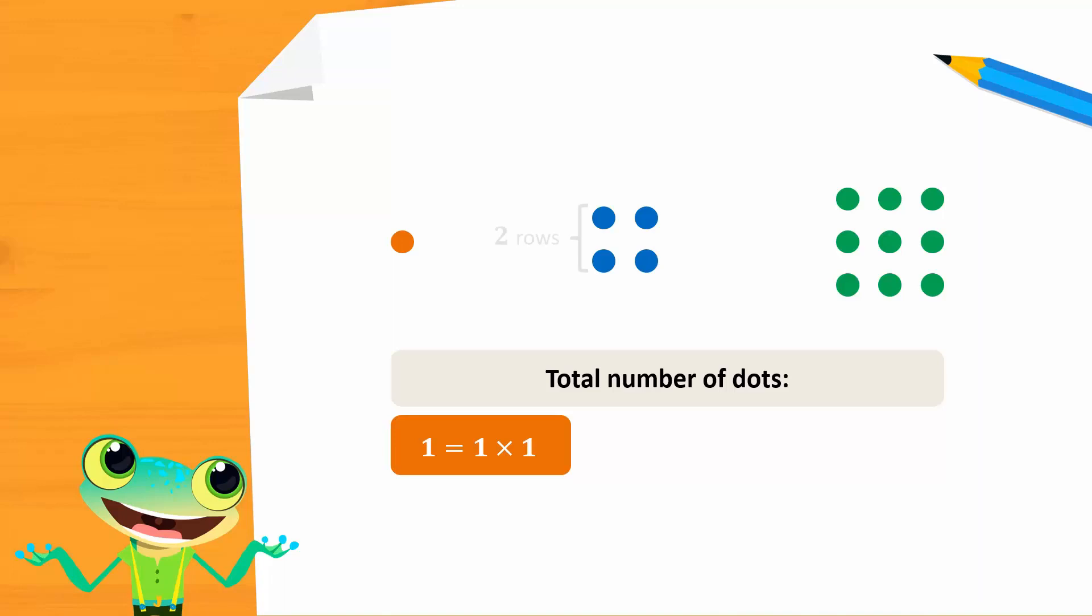In the second group, there are 2 rows and 2 columns. So we have 2 times 2, which gives us 4 dots. In the third group, there are 3 rows and 3 columns. So we have 3 times 3, which gives us 9 dots.